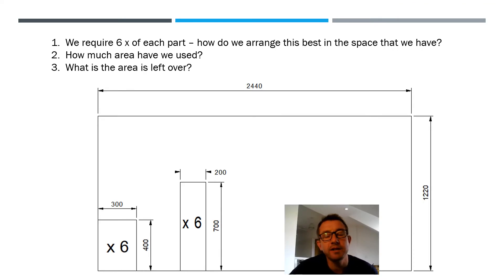And this is a classic challenge. So we require as a design product six pieces of this material, 700 by 200, and six pieces of this material, 400 by 300. How do we go about arranging this in the space we have? What's the best arrangement to minimize wastage? How do we go about that? What material area that we've got left over? And what material have we used? So we've got to start thinking and using a bit of our planning brain. How can we go about planning what's best for our material area? Not always straightforward.